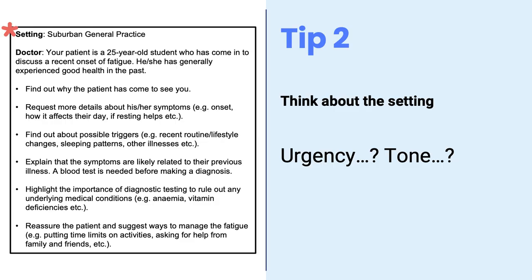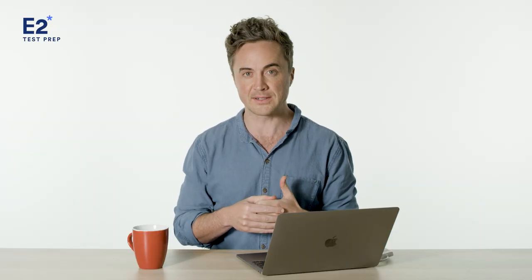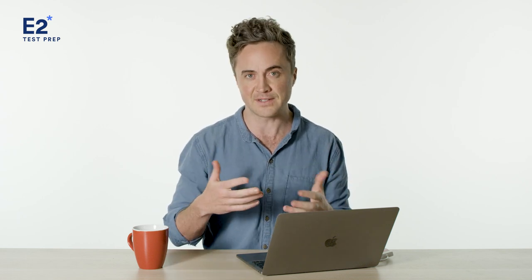Tip two is to think about the setting. If we look at the roleplay card, you can see the setting. Below that you'll see the scenario, and below the scenario you'll see the various tasks. The setting tells us about the sense of urgency you need to use, and that will dictate the tone of your language. This particular roleplay card's setting is in a general practice or a clinic, or maybe a home care visit, where the urgency and tone will be a lot milder. You could however get a roleplay card where you are in an ICU, in which case the tone might be very different — there might be a greater sense of urgency — and this will have an effect on the language you use.